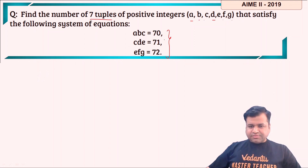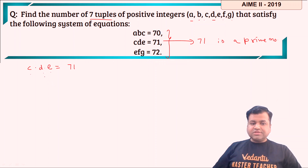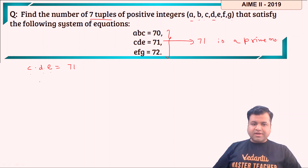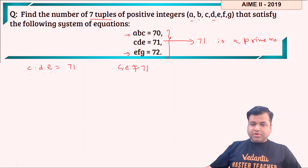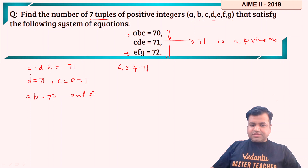The biggest hint here is the middle number 71, which is a prime number. Since C·D·E = 71 and 71 is prime, exactly one of these three terms must be 71 and the remaining two must be 1. Since C appears in the first equation (A·B·C = 70) and E appears in the third (E·F·G = 72), neither C nor E can equal 71 — because 70 and 72 are not multiples of 71. Therefore D = 71 and C = E = 1.